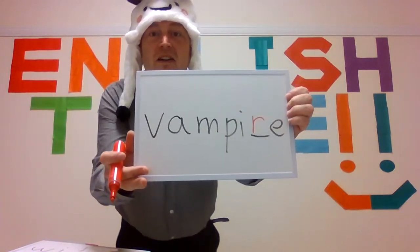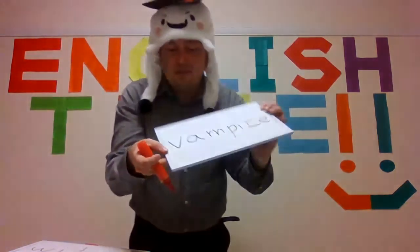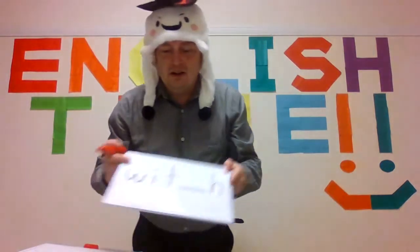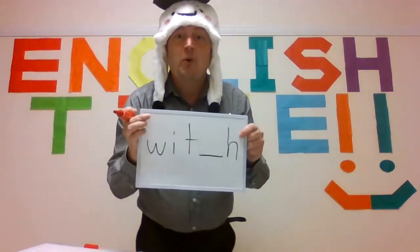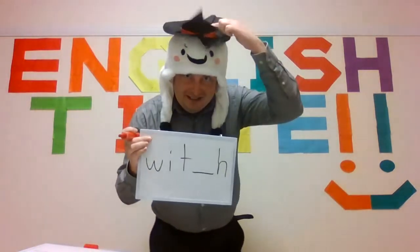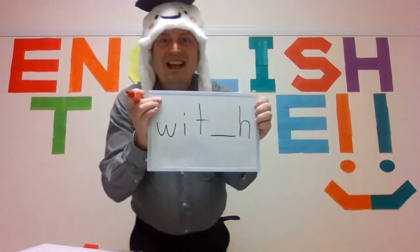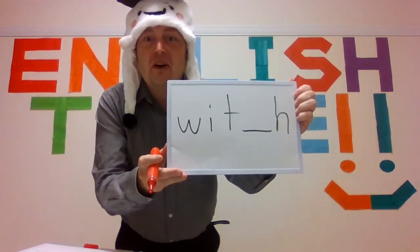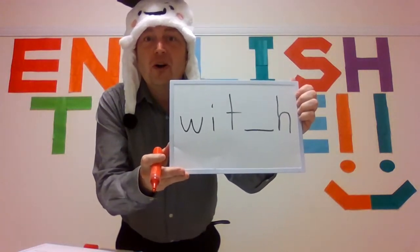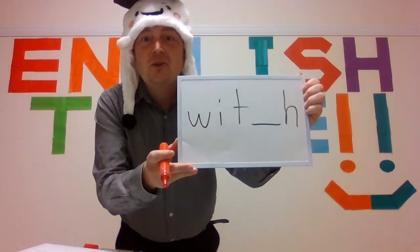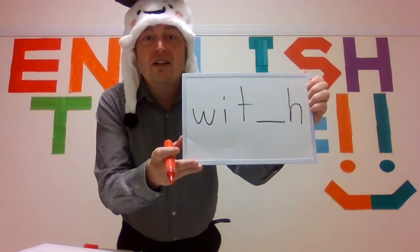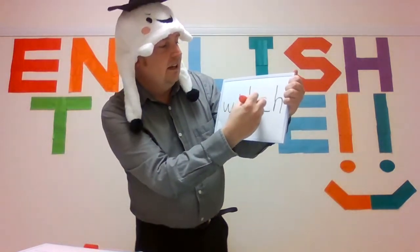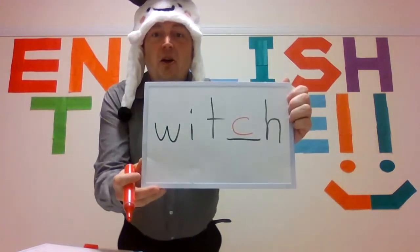Please repeat: vampire, vampire. Very good! The next one is witch — I have a ghost, witch. Five seconds: five, four, three, two, one. The answer is C. Please repeat: witch, witch.